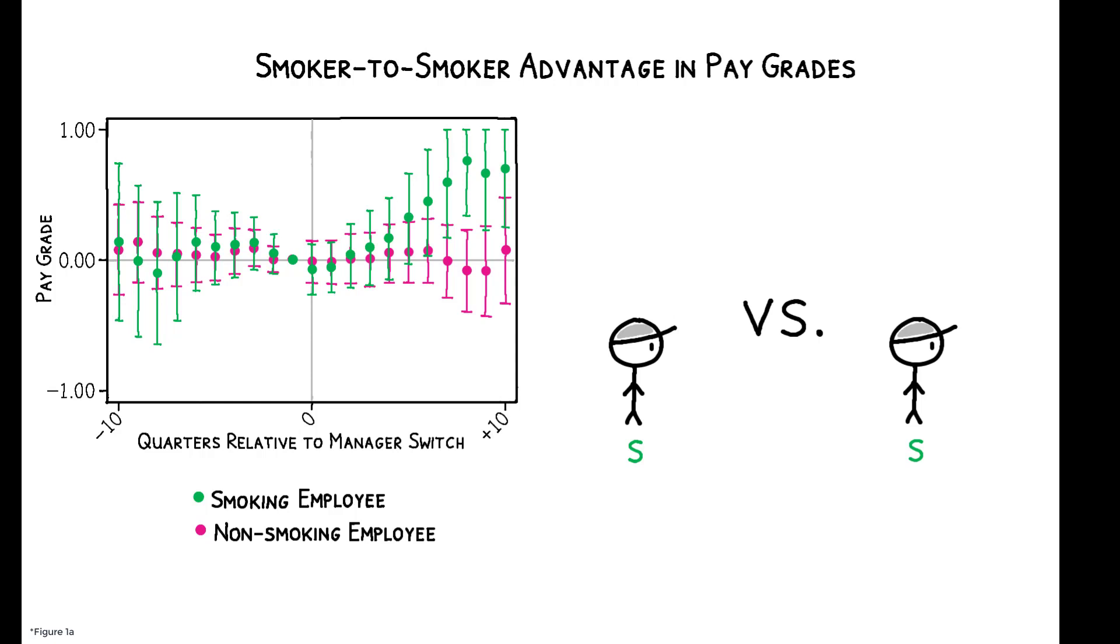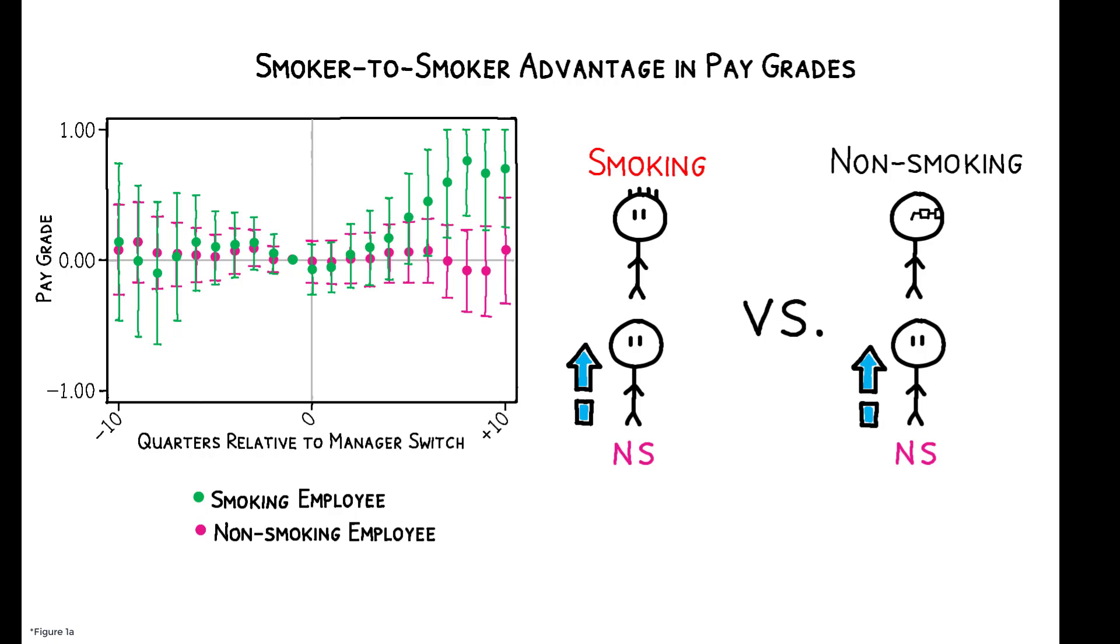Smoking employees are promoted more quickly when they are assigned to a smoking manager. Ten quarters after the transition, their pay grade is 0.7 points higher relative to smokers who received a new non-smoking manager. In contrast, non-smoking employees have similar promotion rates whether they are assigned to a smoking or non-smoking manager.